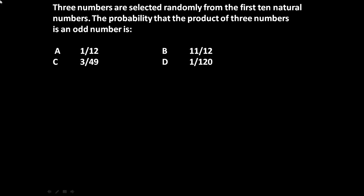Here the given problem is: 3 numbers are selected randomly from the first 10 natural numbers. The probability that the product of 3 numbers is an odd number is — meaning out of 10 numbers we have selected 3 numbers, and the condition is the multiplication of these 3 numbers must be an odd number. Four options are given and we have to select the correct one.